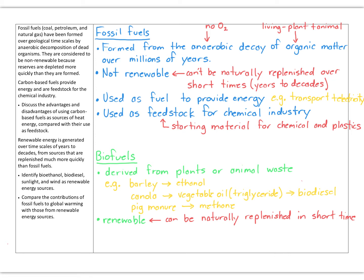Sometimes this next bit feels more like an environmental science course than a chemistry course, but it is in the subject and it is important information. We need to know what fossil fuels are, what biofuels are, and understand renewable versus non-renewable resources. We need to discuss the advantages and disadvantages of carbon-based fuels as a source of heat compared with their use as feedstock, and identify bioethanol, biodiesel, sunlight, and wind as renewable energy sources, comparing their contributions to global warming with those from fossil fuels.